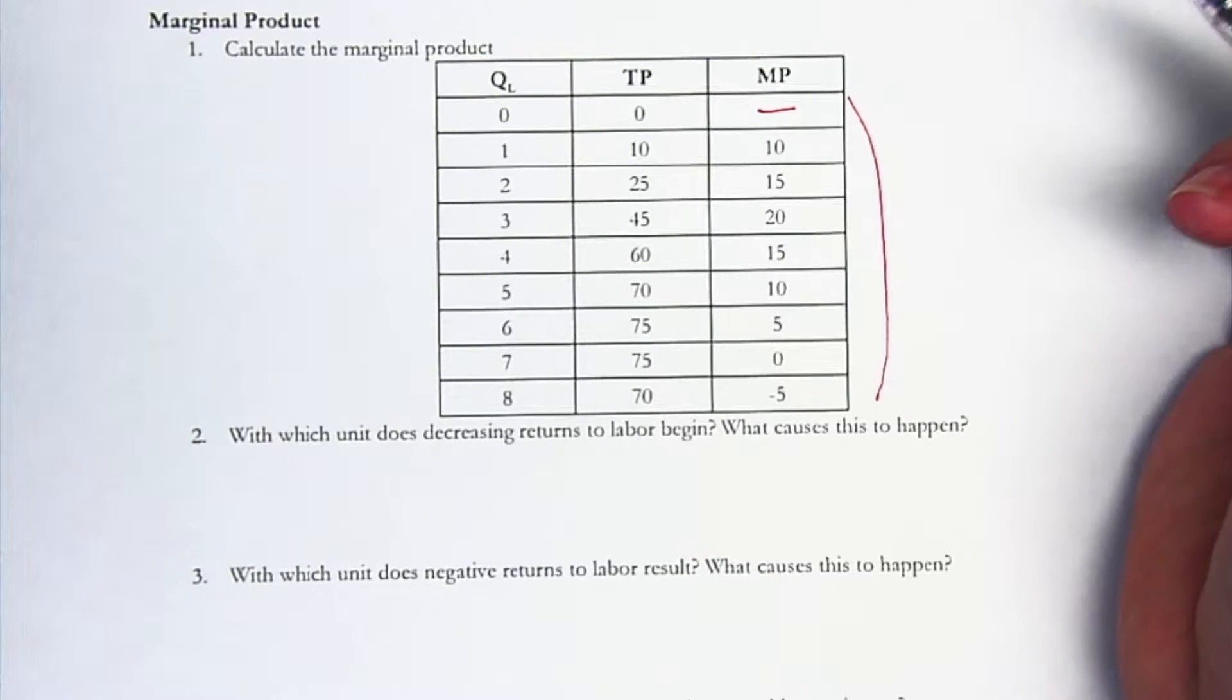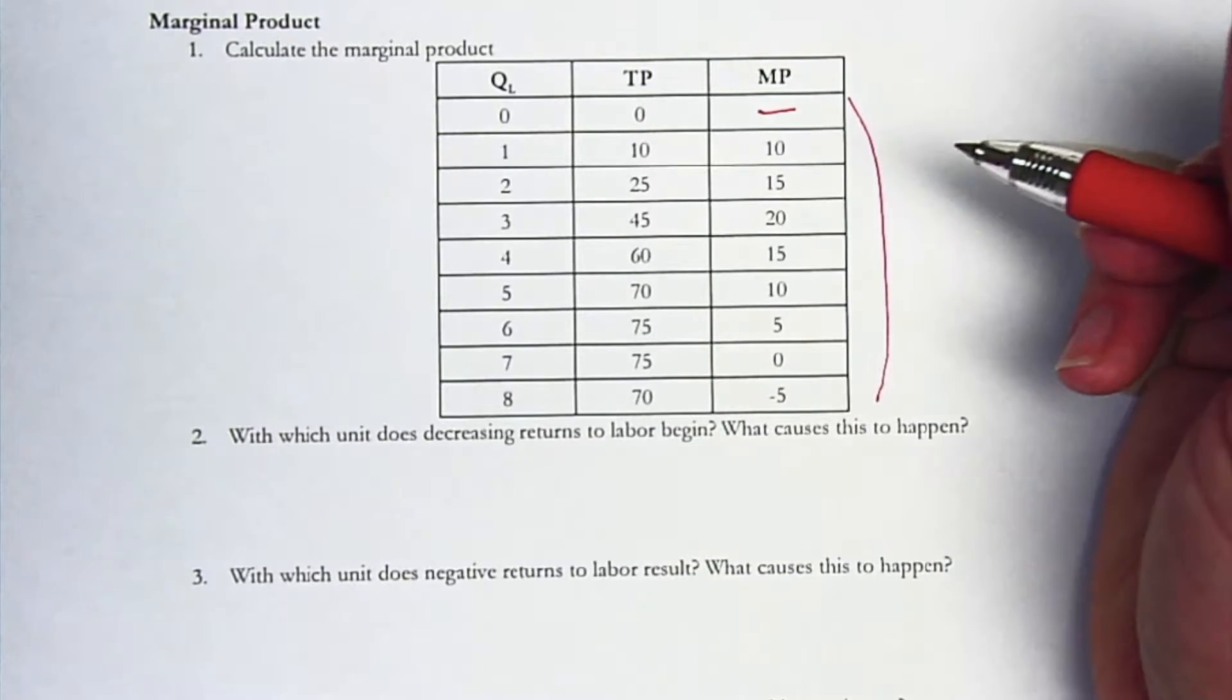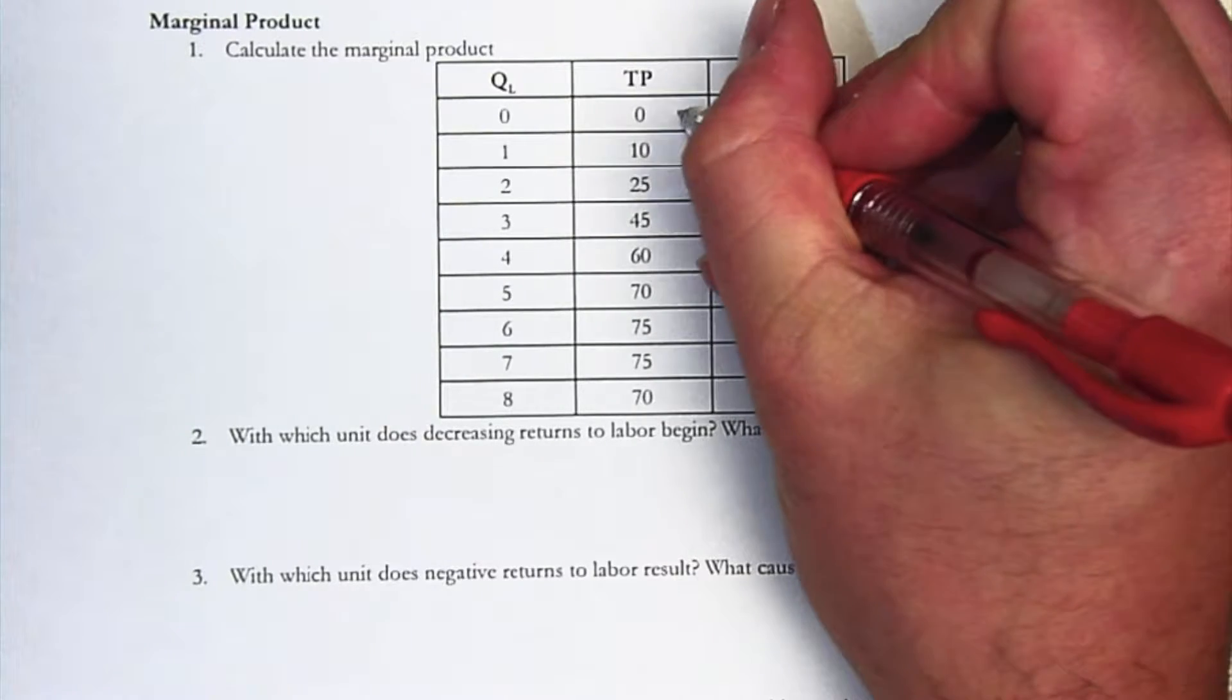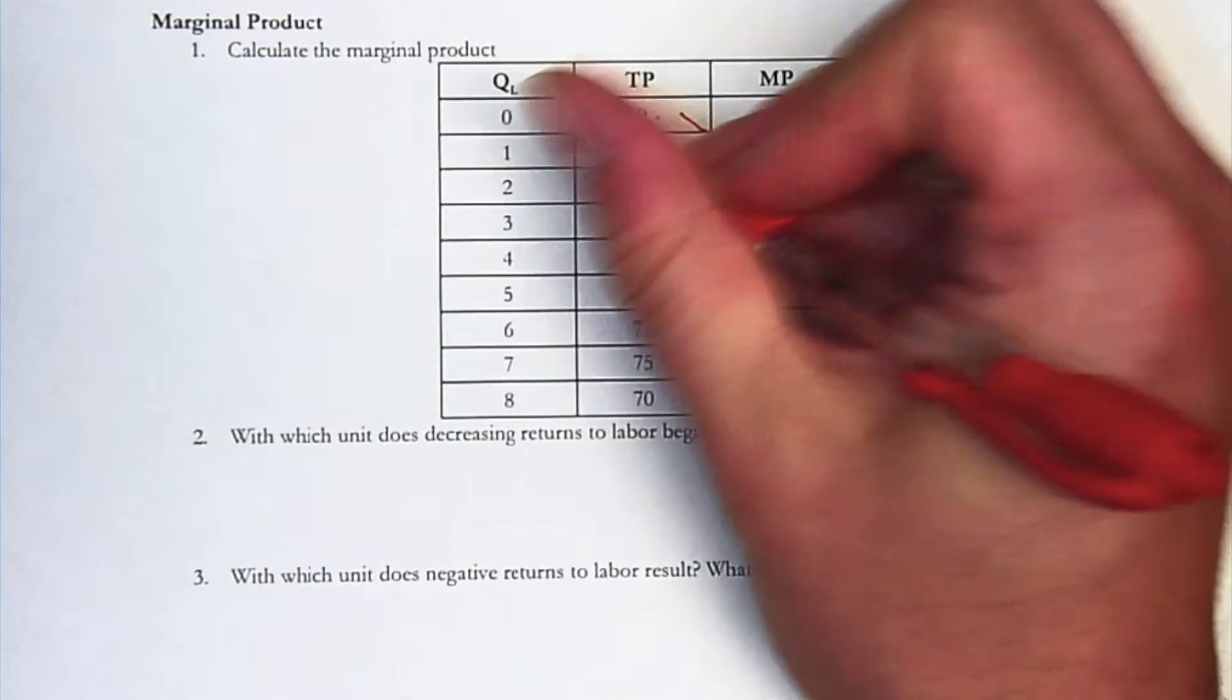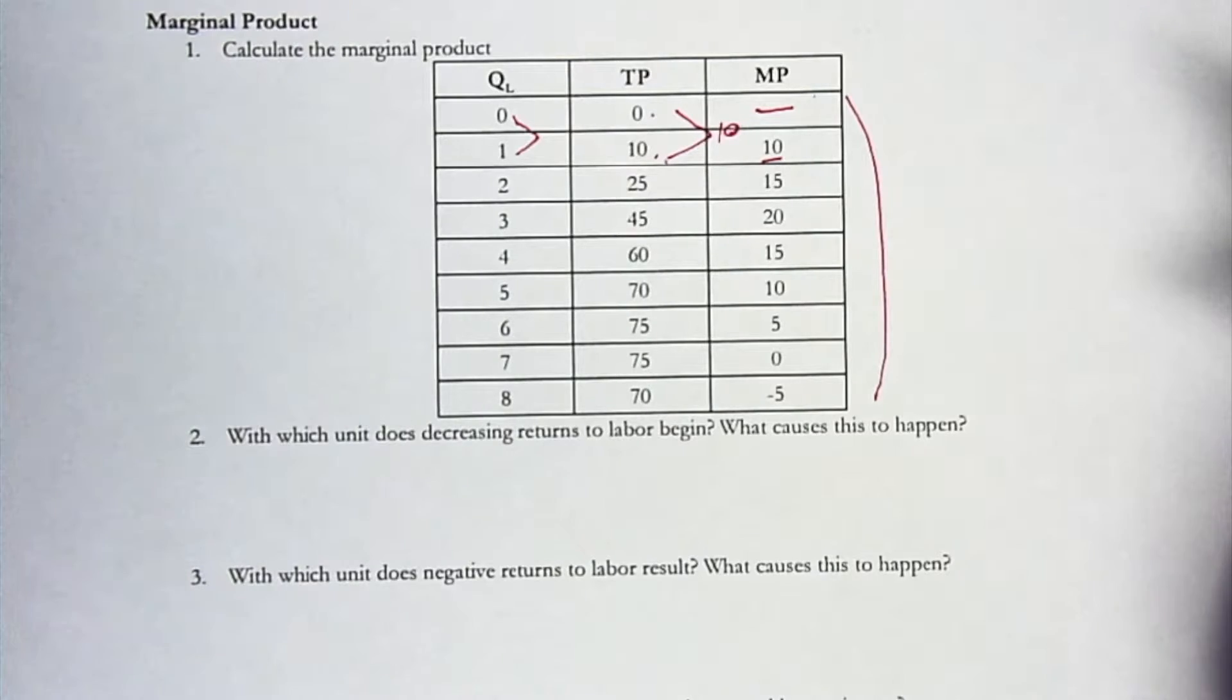There isn't a value for the zeroth unit of labor for marginal product, because that unit doesn't technically exist. This marginal product that's listed here as 10 is actually the difference between these two is 10. And for that, it's the first worker. So the first worker's marginal product is 10.